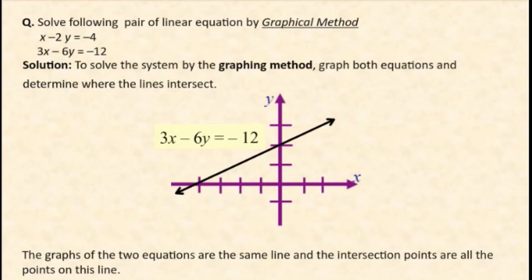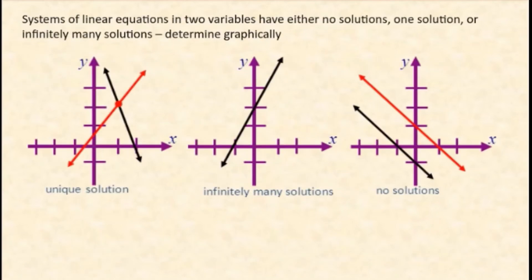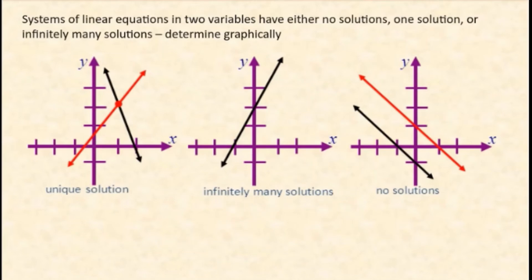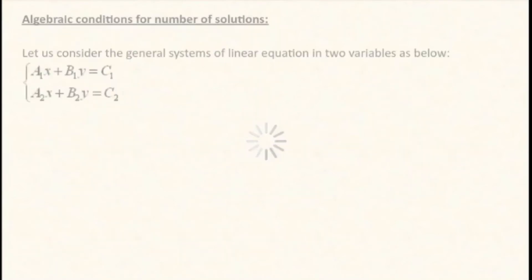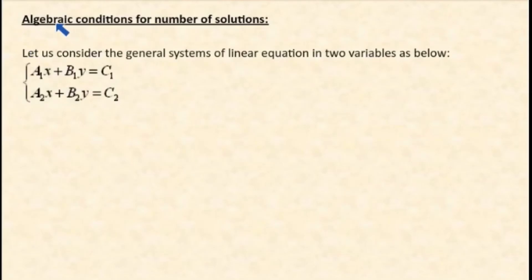Systems of linear equations in two variables have either no solution, one solution, or infinitely many solutions, determined graphically as follows: if the lines intersect at a point, there is exactly one solution; if the lines are parallel, there is no solution; if both equations represent the same line, there are infinitely many solutions.